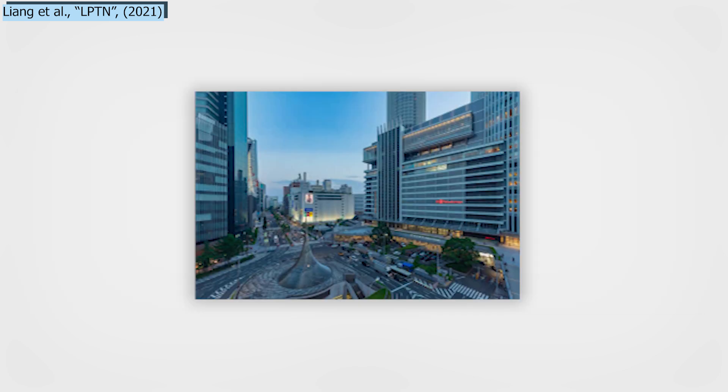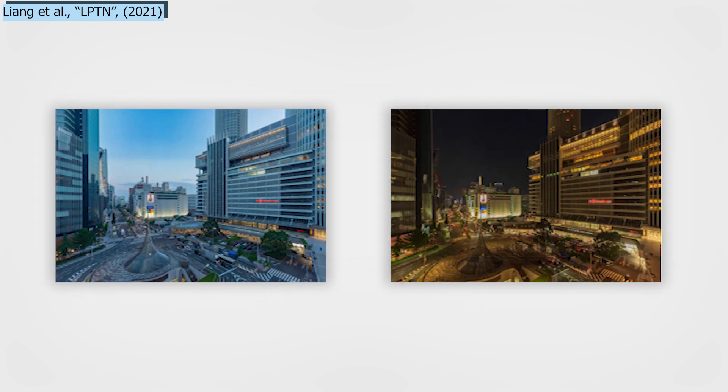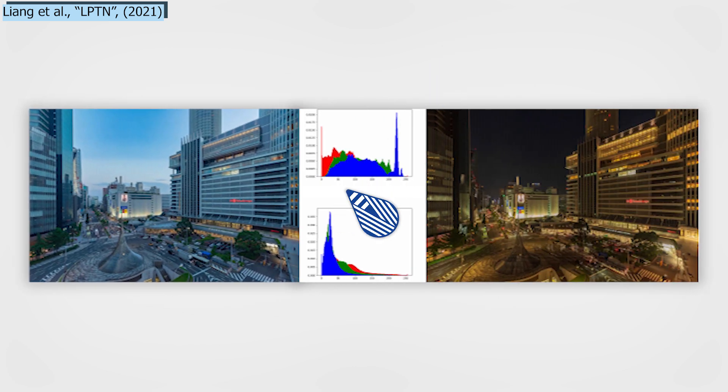How can they be so much more efficient and still produce amazing and high-quality results? This is achieved by optimizing the fact that illumination and color manipulation, which relates to the style of an image, is contained in the low-frequency component of an image.